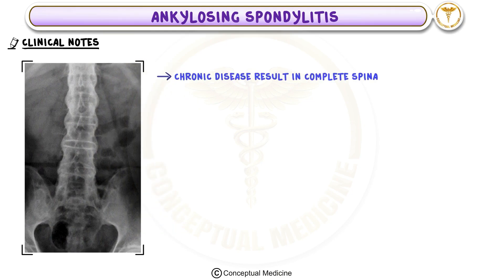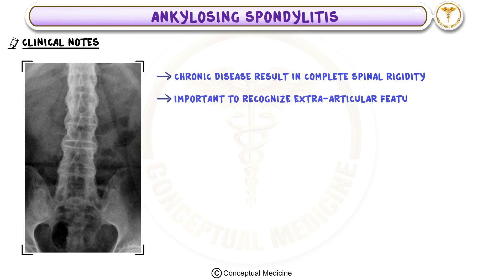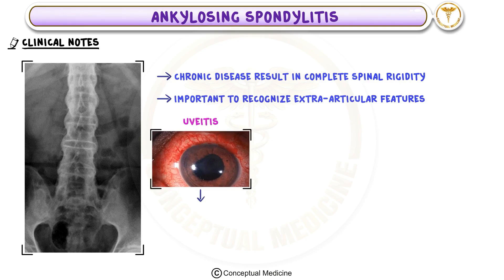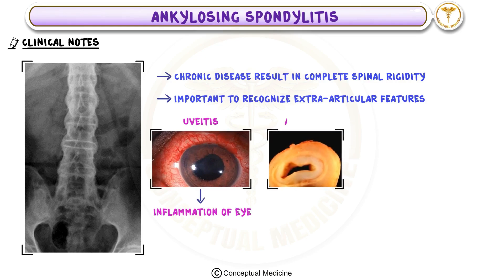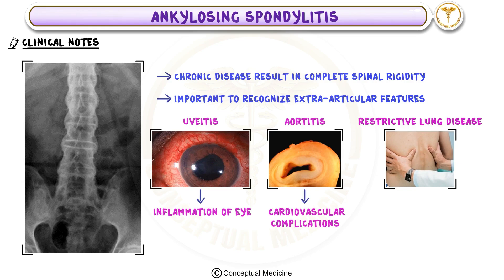AS is a chronic disease that may eventually result in complete spinal rigidity, significantly impacting the patient's quality of life. It's also important to recognize the extraarticular features: inflammation of the eye (uveitis), inflammation of the aorta which can lead to cardiovascular complications, and restrictive lung disease caused by limited chest expansion due to spinal rigidity.